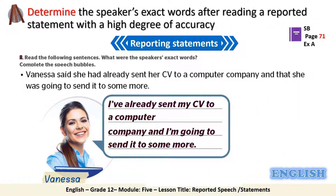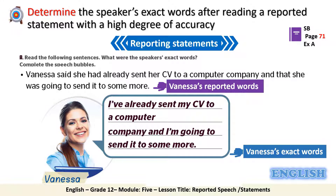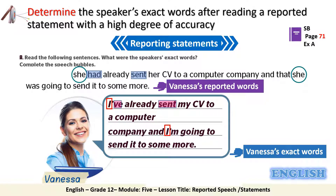Let's begin with Activity A, page 71. We have Vanessa's reported words and below are Vanessa's exact words. Let's see how to determine the speaker's exact words. First we cross out the introductory verb 'Vanessa said.' Then the pronoun 'she' changes into 'I.' The present perfect replaces the past perfect and 'had sent' becomes 'sent.' Then the possessive adjective 'my' replaces 'her,' and the present tense takes the place of the past tense and 'was' becomes 'is.'